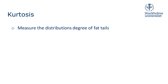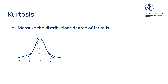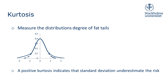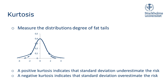Kurtosis is a measure of the distribution's degree of fat tails. A positive kurtosis means that large deviations are more common than suggested by the normal distribution, and therefore implies that standard deviation underestimates the risk. A negative kurtosis instead implies that the tails are thinner than suggested by the normal distribution, and hence the standard deviation overestimates the risk, since large deviations from the mean are less common than we assume, which in turn makes the expected return a better estimate.